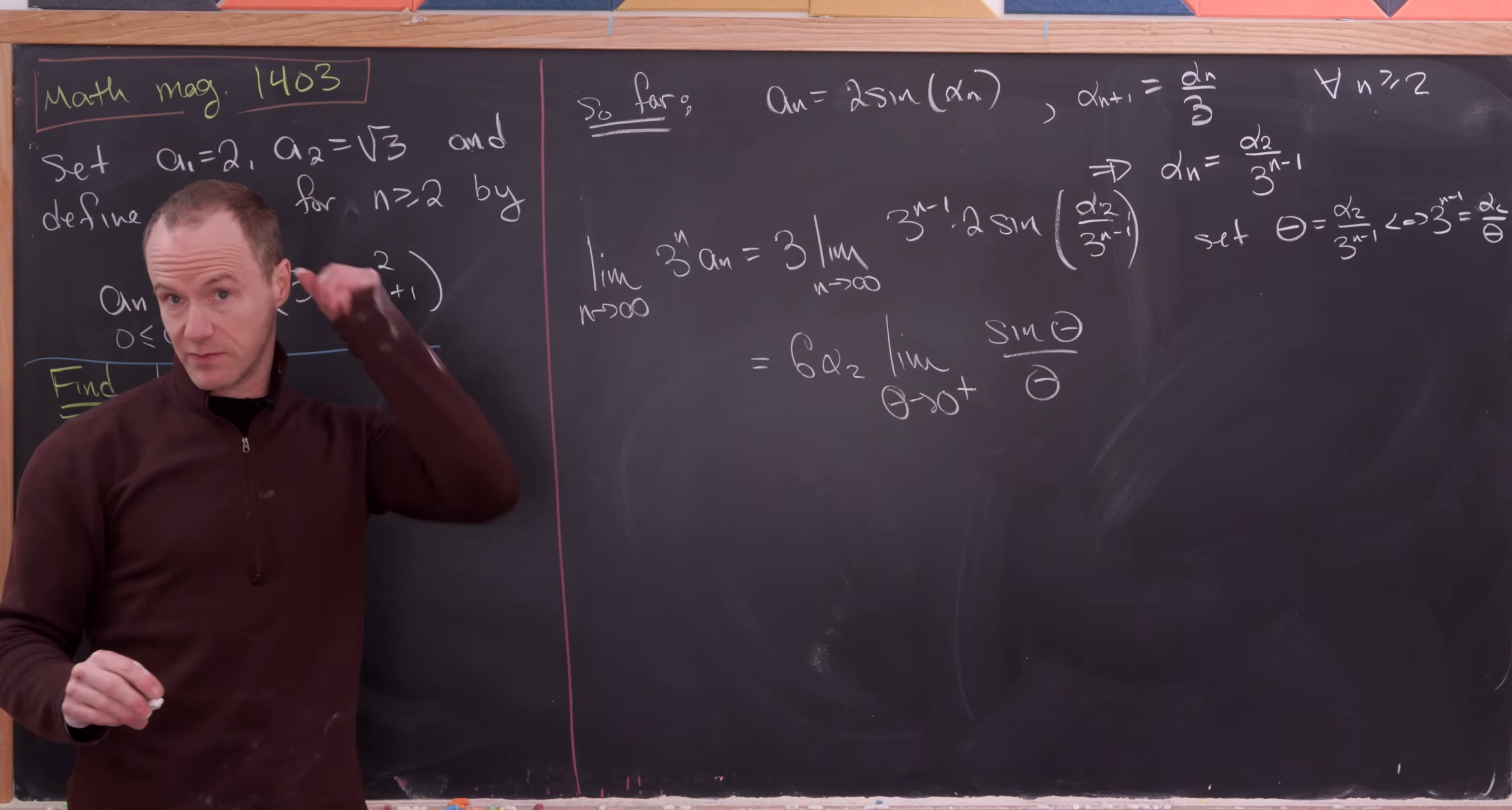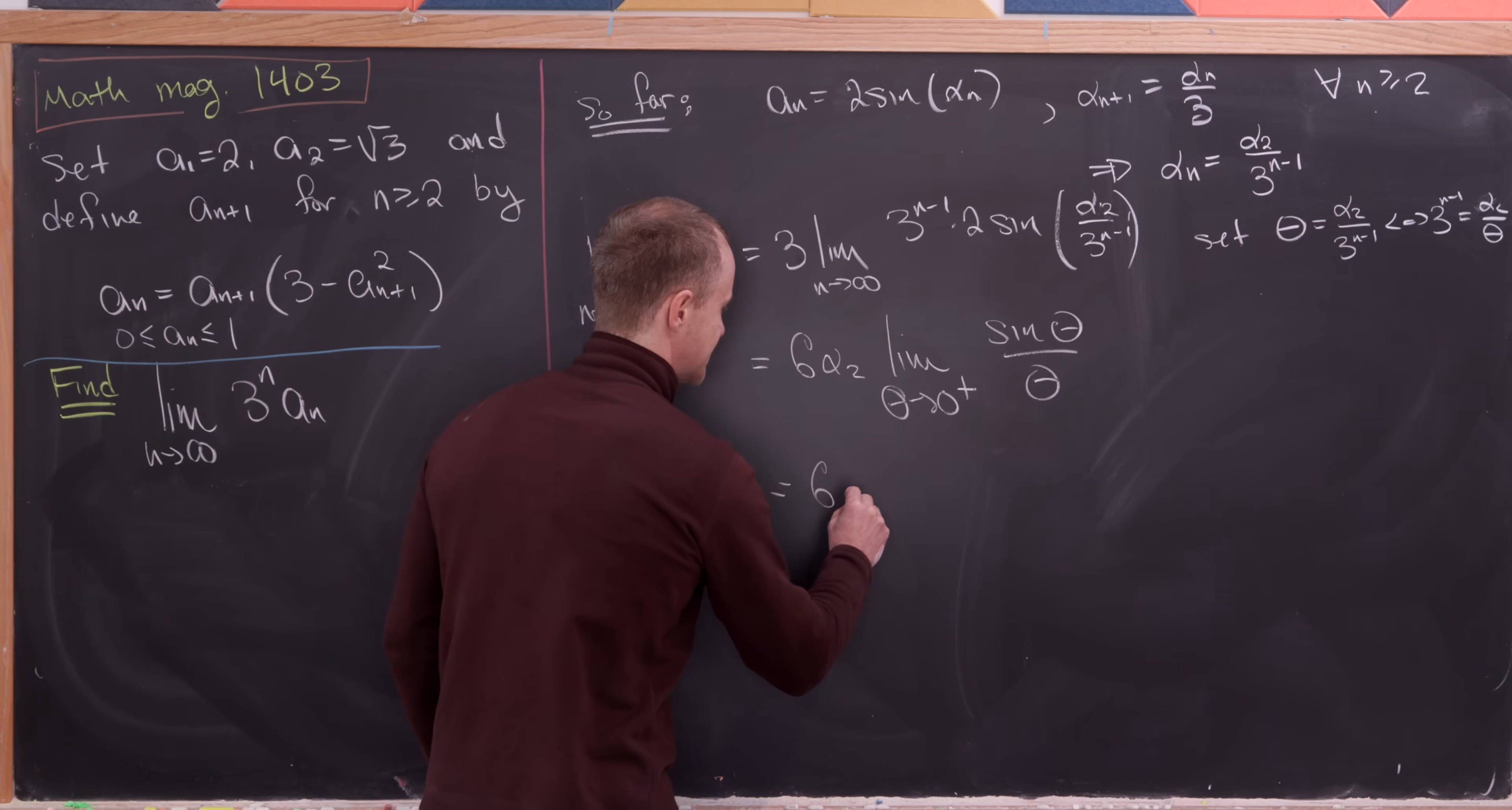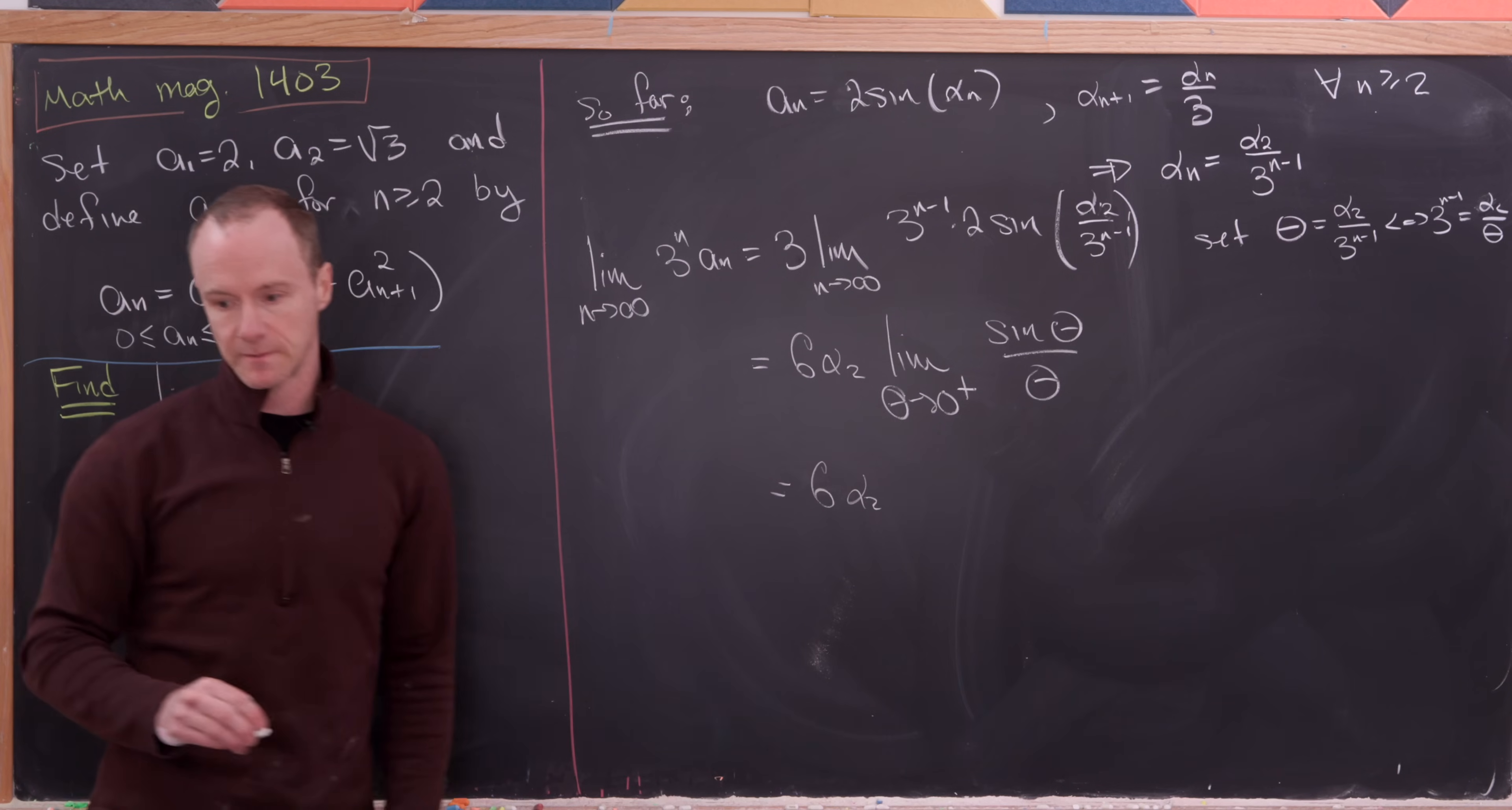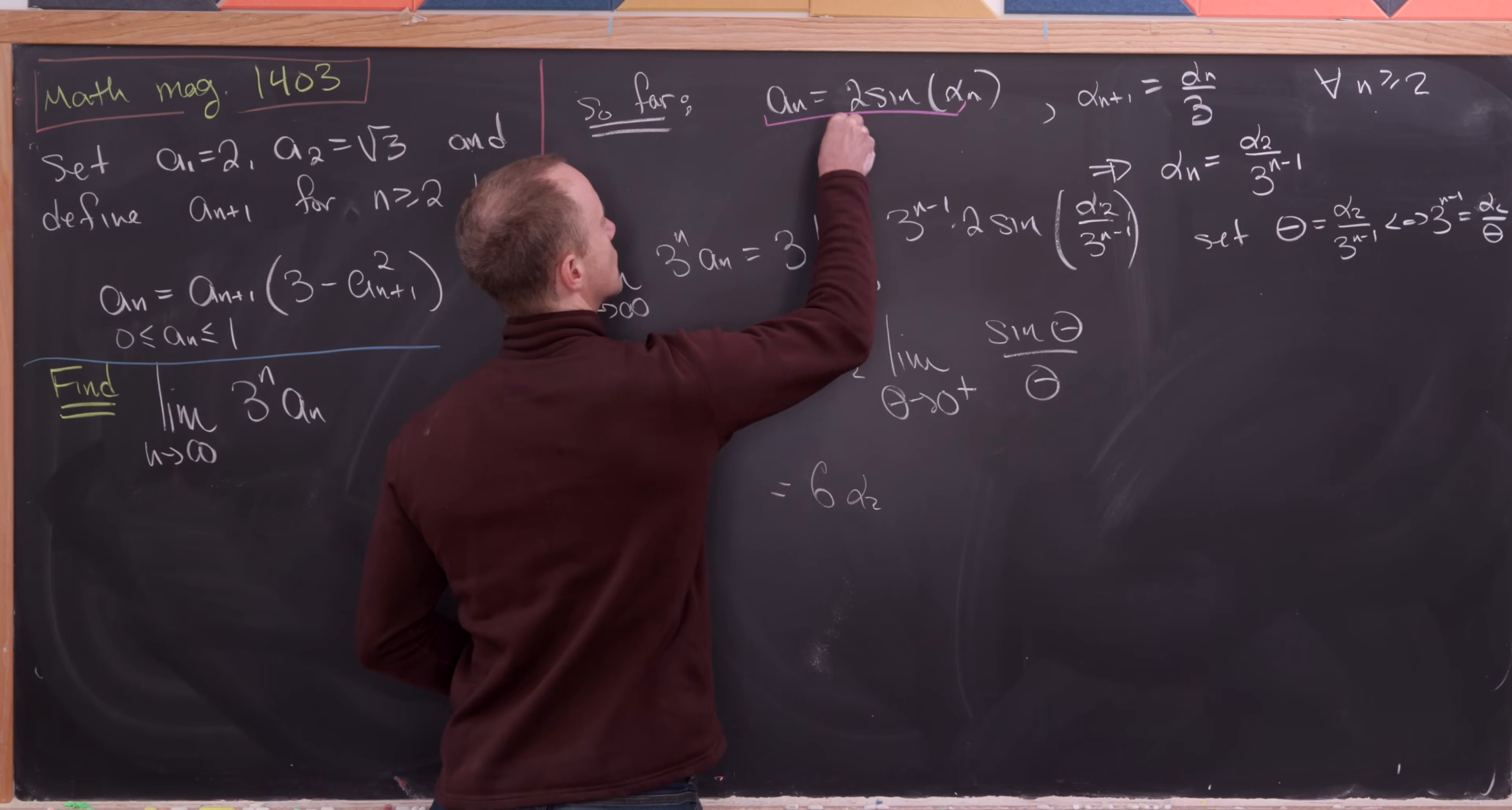But that limit, like I said before, is well known, it's equal to 1. So in the end we have 6 times alpha 2.